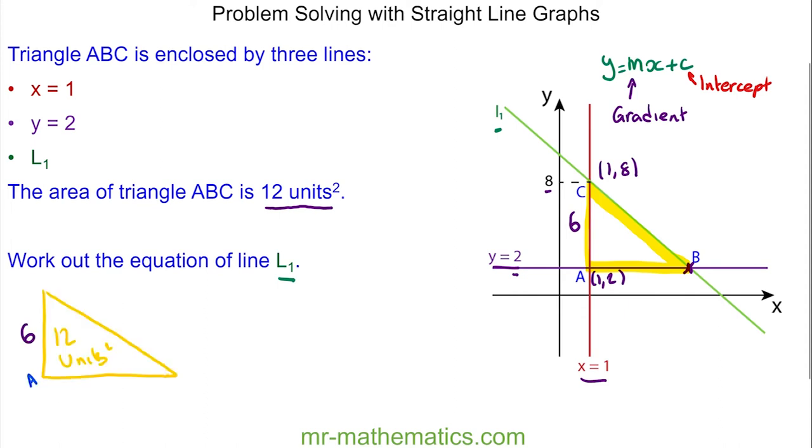So now we can work out the base of our triangle. I'm going to draw the triangle separately. Because the perpendicular height is 6 units, we know the base must be 4 units, because the area of a triangle is base times height divided by 2, and 4 times 6 divided by 2 makes 12.